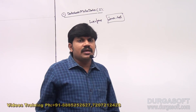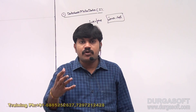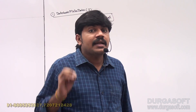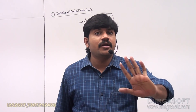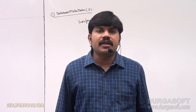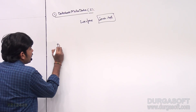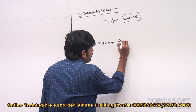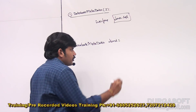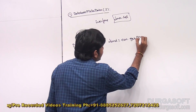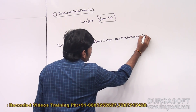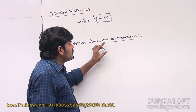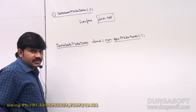To get the DatabaseMetaData object, we call the getMetaData() method on the connection object. The syntax is: DatabaseMetaData dbmd = con.getMetaData(). Once we call con.getMetaData(), we will automatically get the DatabaseMetaData object.